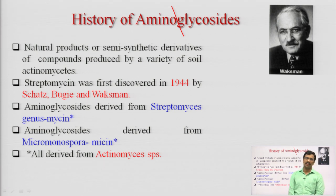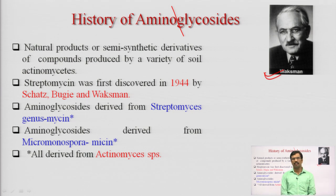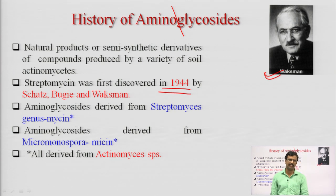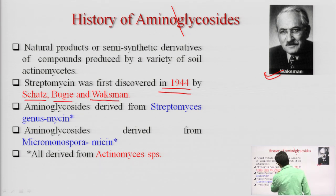Aminoglycosides were first isolated by scientist Waksman, a Nobel laureate who received the Nobel Prize for isolation of antibiotics. He isolated this antibiotic from a soil actinomycetes named Streptomyces griseus. Streptomycin was first discovered in 1944, nearly around the discovery of sulfonamides. It was a collaborative work of Waksman along with Schatz and Bugie — three scientists were involved in the discovery of Streptomycin.